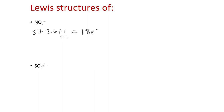I wouldn't necessarily guess a Lewis structure unless you know it for sure. I would try to figure out by first single bonding the non-central atoms to the central atom. So the two oxygens have to be connected to nitrogen — that's fairly straightforward.